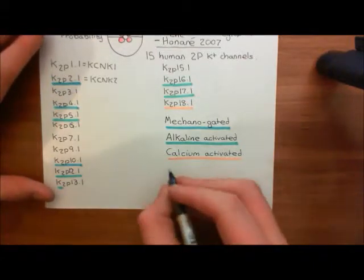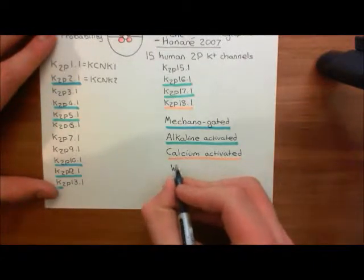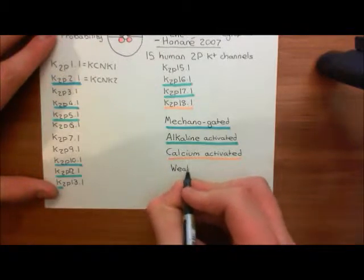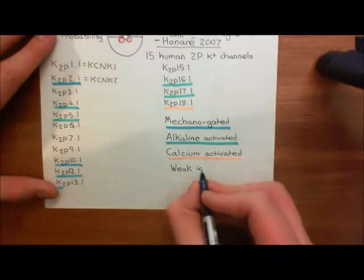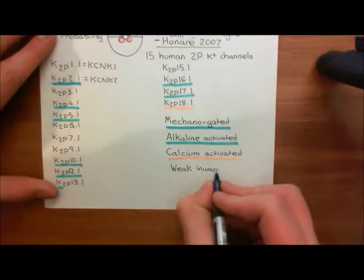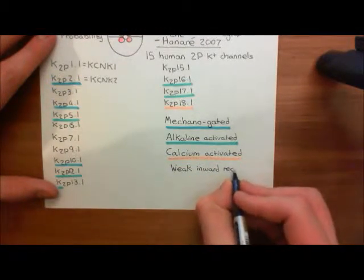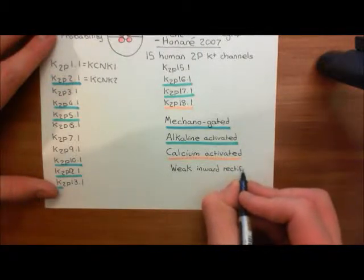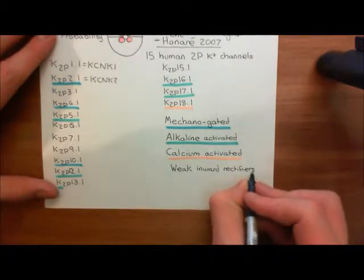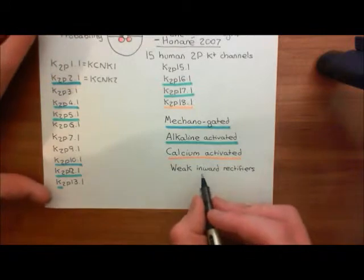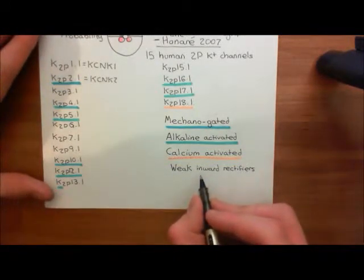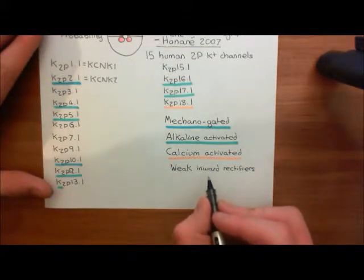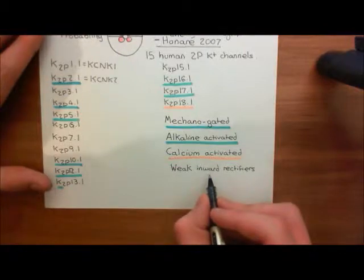Now we're going to talk about the two pore-domain potassium channels which are weak inward rectifiers. I want to explain what is meant by saying that these channels are weak inward rectifiers. Basically, if a potassium channel is an inward rectifier, it means that it prefers to allow potassium to move in rather than allowing potassium to move out.